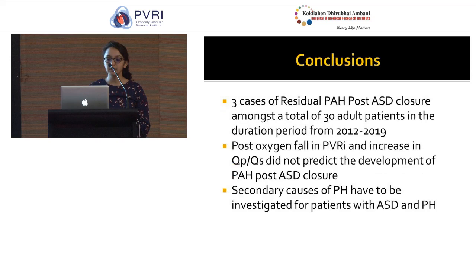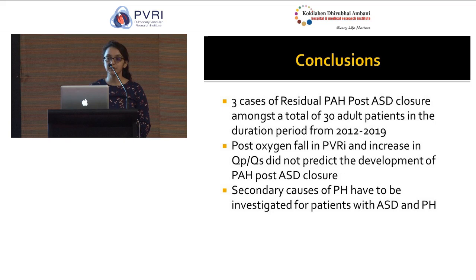To conclude: out of the 30 patients referred for ASD closure, three had residual pulmonary artery hypertension. In the hemodynamics pre-procedure, the post-oxygen fall in PVRI and increase in Qp:Qs did not predict the development of pulmonary artery hypertension post-ASD closure. Secondary causes of pulmonary hypertension must be investigated in all patients with ASD and pulmonary hypertension.